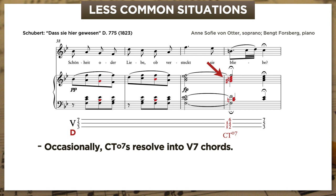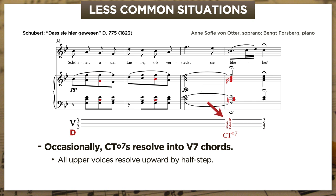Notice first how the voice leading of the common-tone diminished seventh is a little different here. To resolve into V7, all of the upper voices move upward by half-step. For that reason, I'm actually interpreting this chord differently — it sounds more like an embellishment of V7 rather than a really independent chord. So I've analyzed it with figured bass and colored the notes B, D, and G sharp in red to mark them as non-chord tones — more specifically, as lower neighbors to C, E♭, and A. That means, technically, we don't even need the CT⁰⁷ label, because the figured bass already accounts for everything.